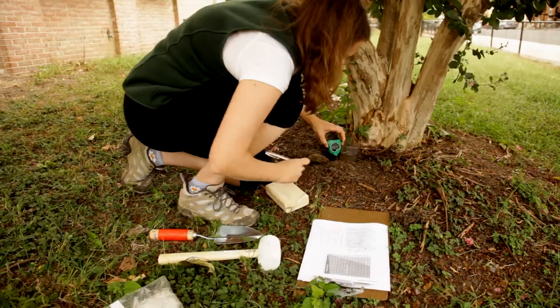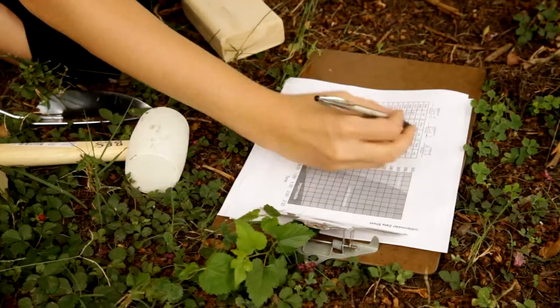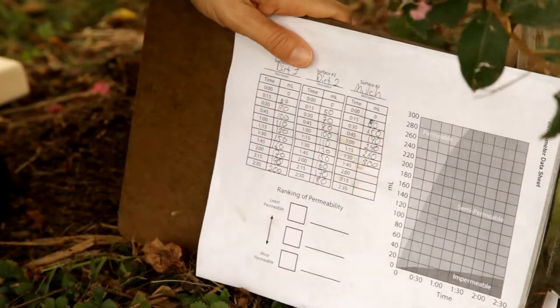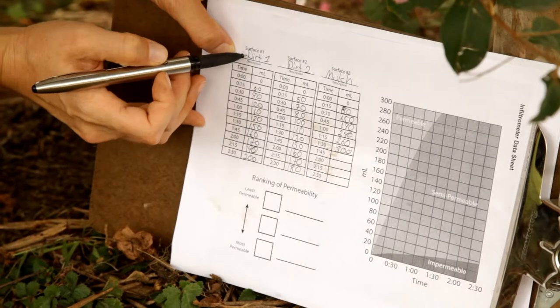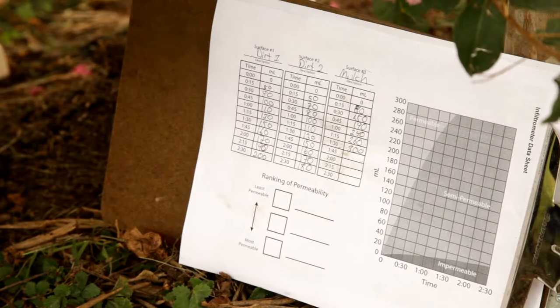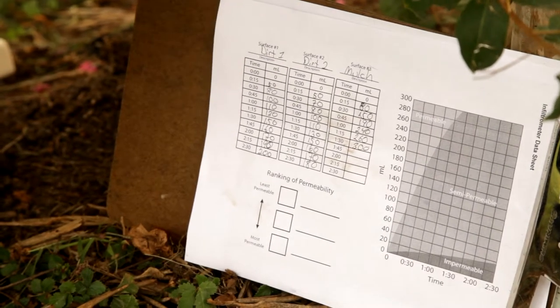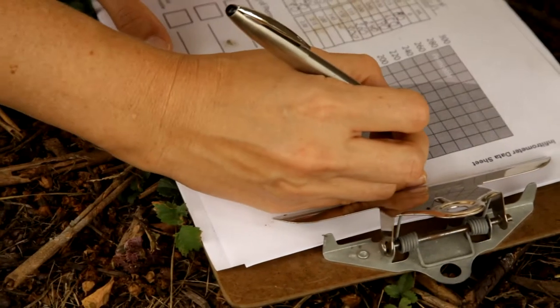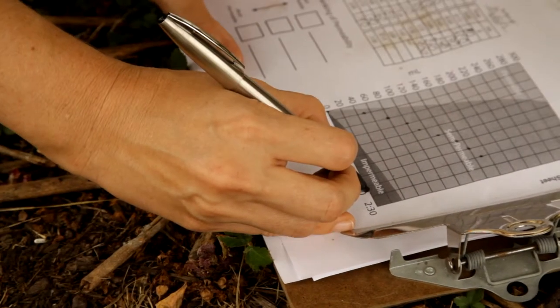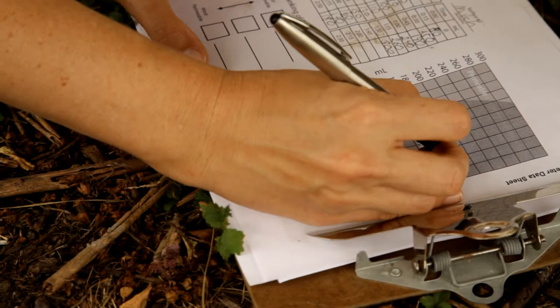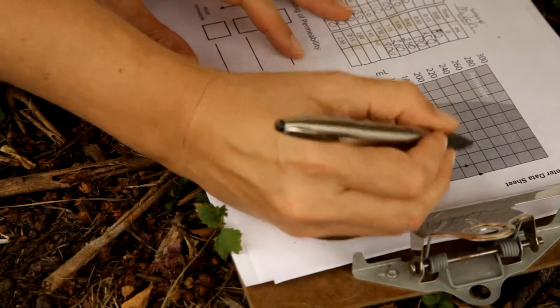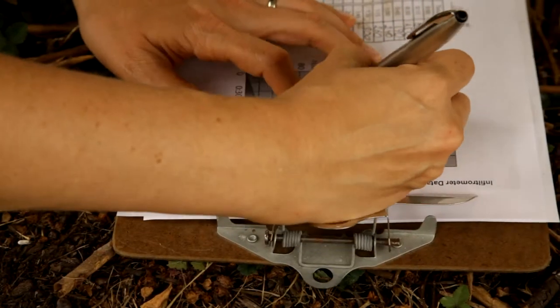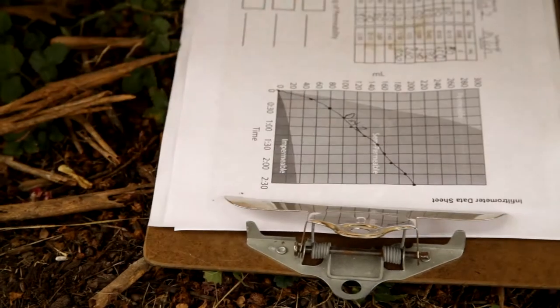Let's take your values and place them on this graph. We'll do one dirt sample and our mulch sample so you can see the difference in the slope of the line. That's going to tell you your rate of infiltration. Zero at zero seconds. Then at 15 seconds we're at 170. At 30 seconds, 190. And at two and a half minutes, 200 milliliters. Then we'll connect our points and label our lines. We'll call this dirt one.